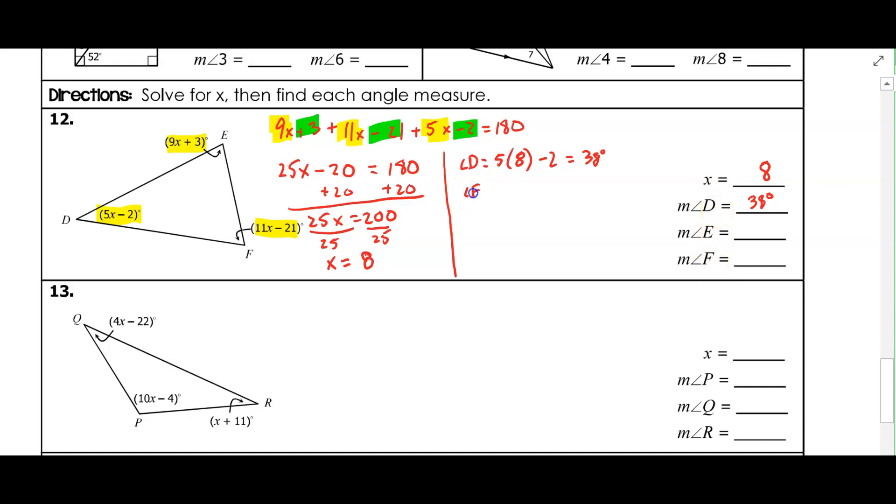So angle E, remember this little M stands for measure. So E is 9 times x, which is 8, plus 3, and that's 75.